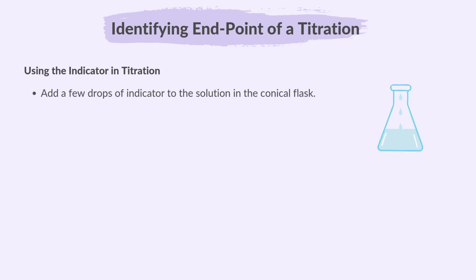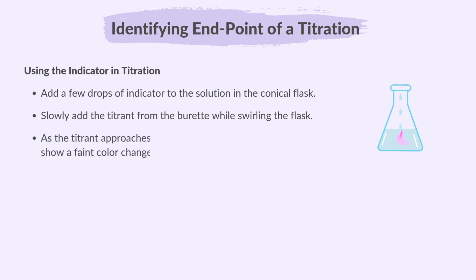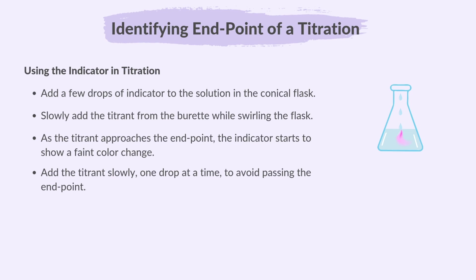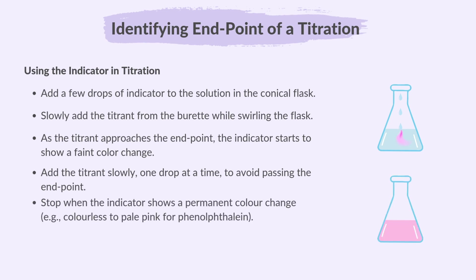Add a few drops of indicator to the solution in the conical flask. Slowly add the titrant from the burette while swirling the flask. As the titrant approaches the end point, the indicator starts to show a faint color change. Add the titrant slowly, one drop at a time, to avoid passing the end point.